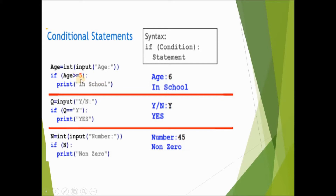The syntax for simple if is: if condition: then statement. If the condition is false, what to do is not mentioned — that's known as simple if. For example, entering 6 displays 'in school'; entering 4 shows nothing, because the condition is false and there's no else part defined.